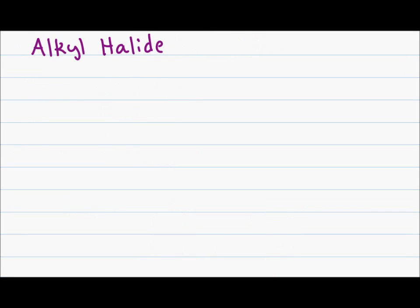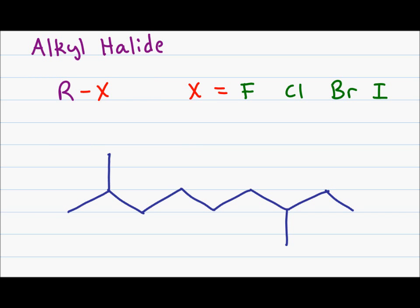The simplest functional group is the alkyl halide, which is our X. X represents the halogens, which include fluorine, chlorine, bromine, and iodine. We characterize the alkyl halide based on the order of the carbon that the halogen is attached to. If I put a fluorine on a terminal or primary carbon, this will be a primary alkyl halide. If I put a chlorine on a secondary carbon, I now have a secondary alkyl halide. And if I put a bromine on a tertiary carbon, this is a tertiary alkyl halide.